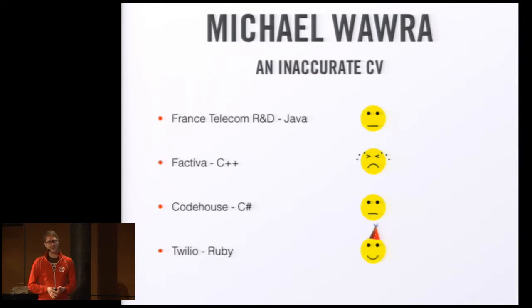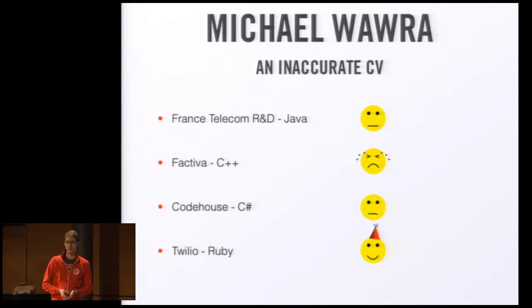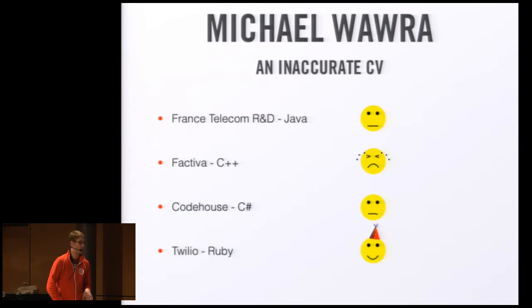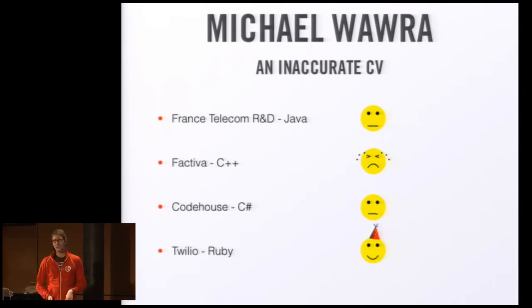At Twilio I do loads of different languages. I've been there for six or seven months and I've done Python, Java, C#, maybe a little PHP, plenty of Ruby - but Ruby is my go-to language. Something very important I need to tell you about everything I've just told you is it's a complete lie. I have a few extra jobs I didn't mention and some of that code is mixed around, but that's the outline. I've basically been doing C# for about ten years.